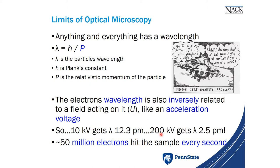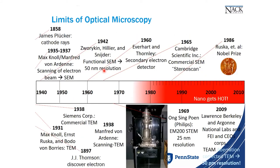If we speed electrons up to 200 kilo-electron volts, it scales down even further to 2.5 picometers. To give you an idea, 50 million electrons are hitting the sample every second.